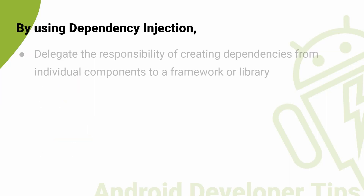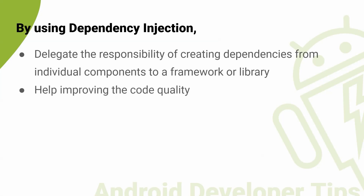By using dependency injection, you can remove the responsibility of creating dependencies from individual components and instead delegate that responsibility to a separate framework or library. Dependency injection can improve code quality in several ways. One of the most significant ways that DI can improve code quality is by reducing coupling between components. When components are tightly coupled, changes to one component can have a significant impact on other components, making the code more difficult to maintain and modify. By decoupling components through DI, each component can be tested and modified in isolation, making the code more modular and easier to maintain over time.